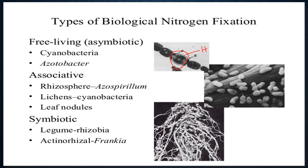Heterocysts are regions present in cyanobacteria that have a very low concentration of oxygen, so that very little photosynthesis happens. They are more focused on the conversion of nitrogen. There is an important reason for this: if nitrogen has to be converted to ammonia, the nitrogenase enzyme must be working.